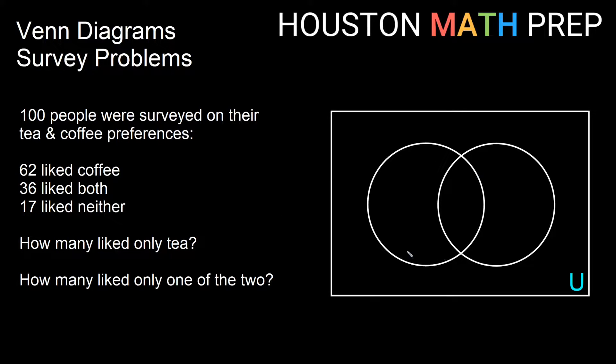My first problem here, we have 100 people that were surveyed on their preferences for tea and coffee, so you may have a preference yourself for either one or both or neither. So here it says that 62 responded that they liked coffee, 36 liked both, 17 liked neither. You may first notice that if you add 62 and 36 and 17, you get more than 100, and that's because all of these numbers don't just simply go in the diagram.